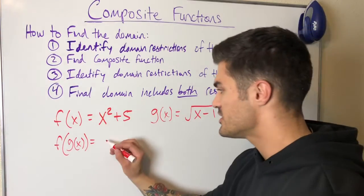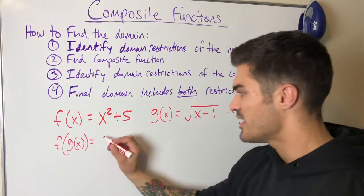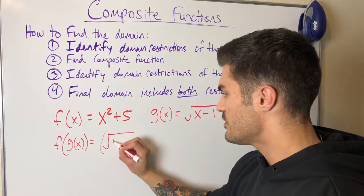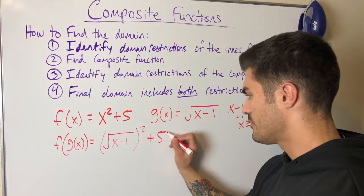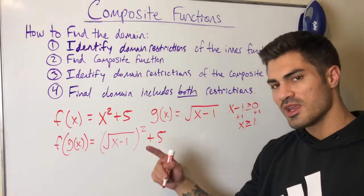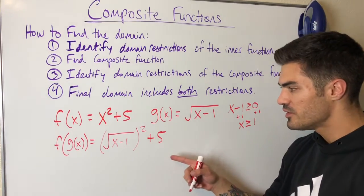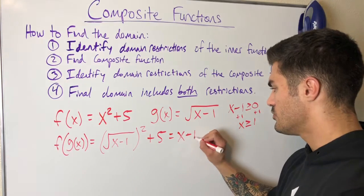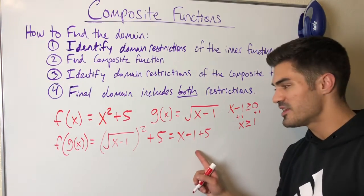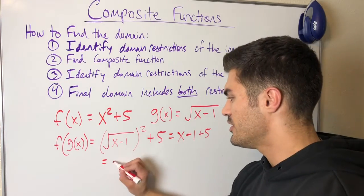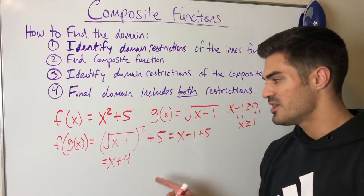Whatever the final composite function is, it must include this restriction plus any additional restrictions. Now we find the composite function by plugging g(x) = √(x−1) into f. We get √(x−1) squared plus 5. The square root and square cancel, leaving x minus 1 plus 5, which simplifies to x plus 4.